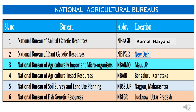Second is NBPGR — National Bureau of Plant Genetic Resources — headquartered at New Delhi. NBPGR plays a pivotal role in the improvement of various crop plants and development of agriculture in India through germplasm. Third is NBAIM — National Bureau of Agriculturally Important Microorganisms — headquartered at MAU, Uttar Pradesh, working on beneficial microorganisms that play an important role in agriculture development. Fourth is NBAIR — National Bureau of Agriculture Insect Resources — headquartered at Bengaluru, Karnataka. Fifth is NBSSLUP — National Bureau of Soil Survey and Land Use Planning — headquartered at Nagpur, Maharashtra. And NBFGR — National Bureau of Fish Genetic Resources — headquartered at Lucknow, Uttar Pradesh.